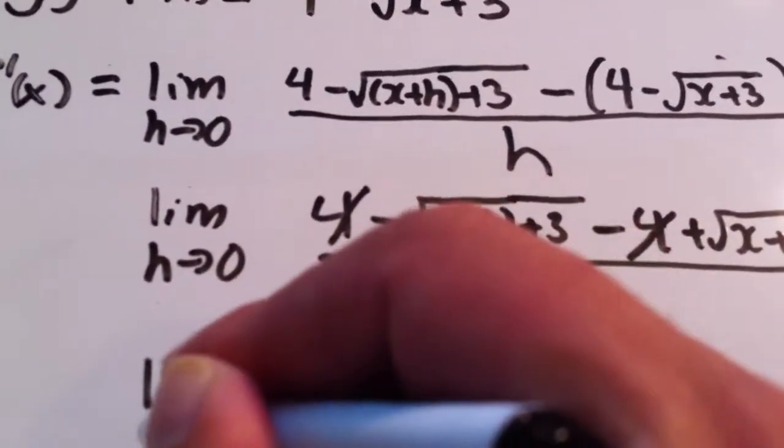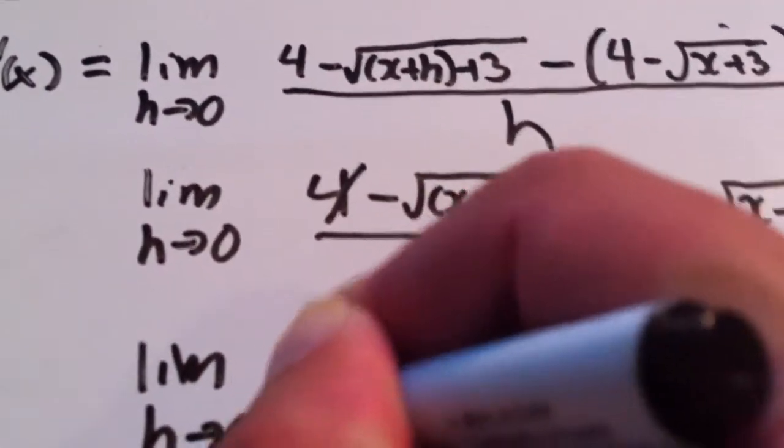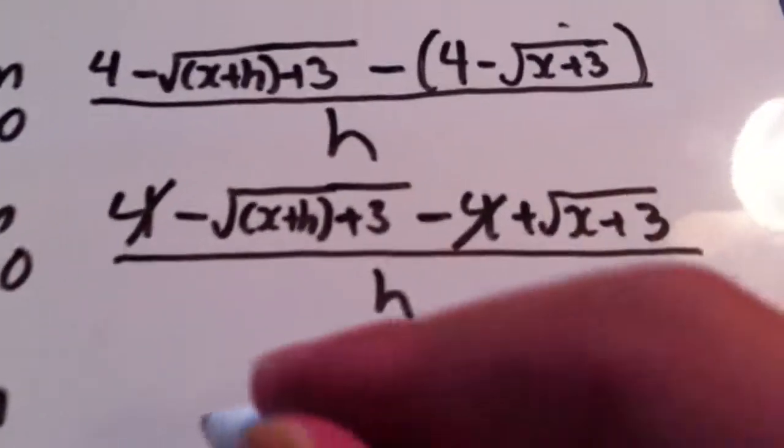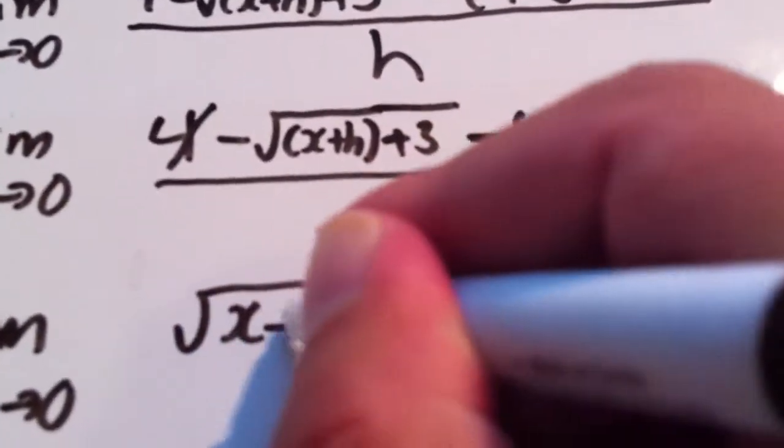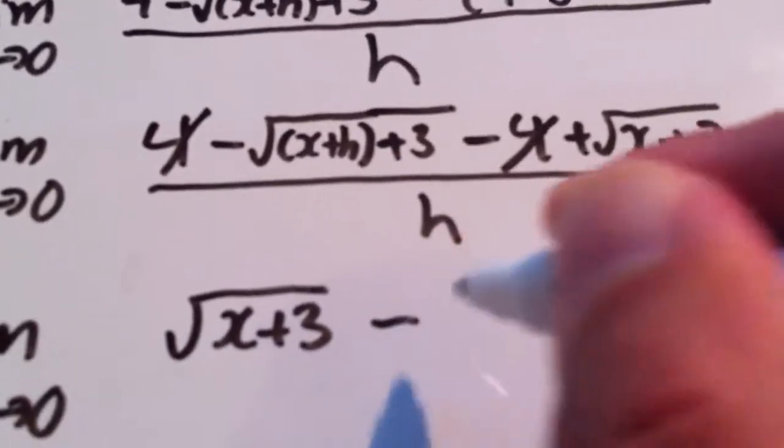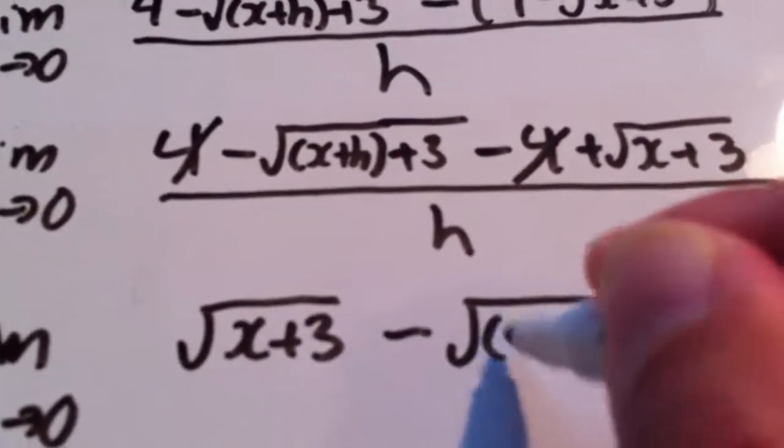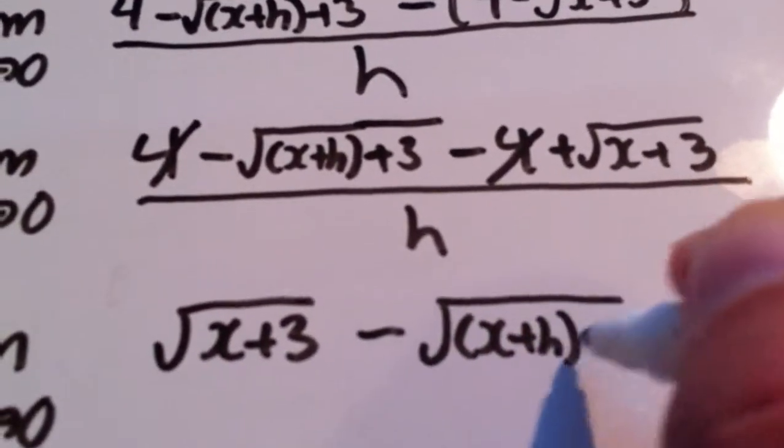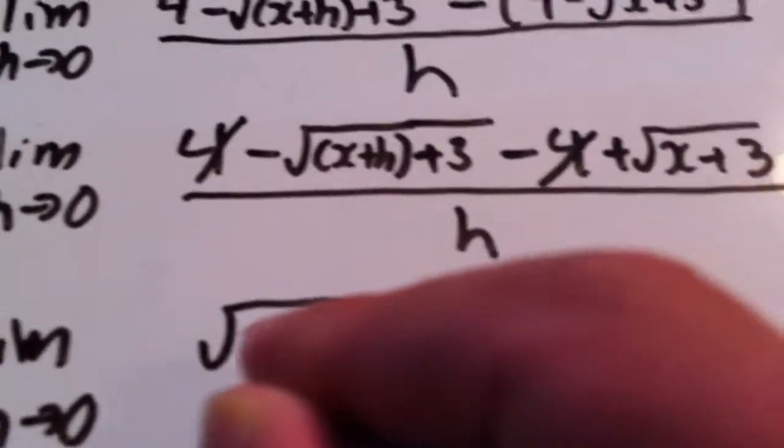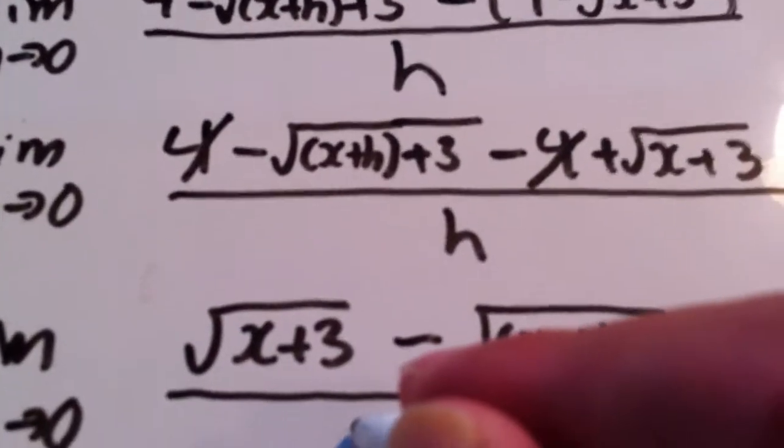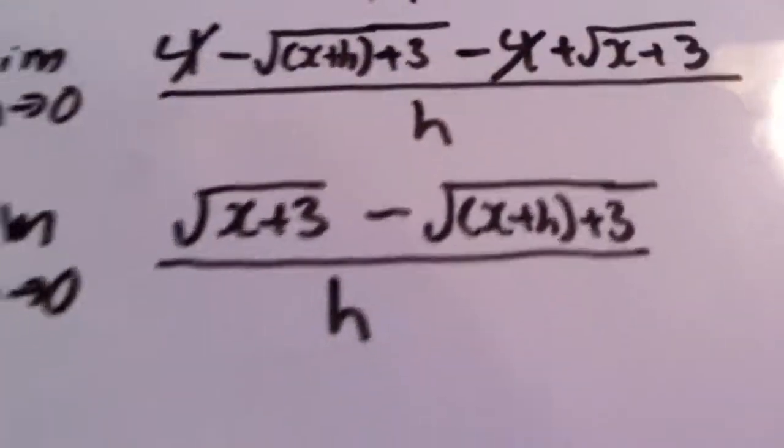So if we did that, we end up with the limit as h approaches 0 of √(x+3) - √(x+h+3), all being divided by h.